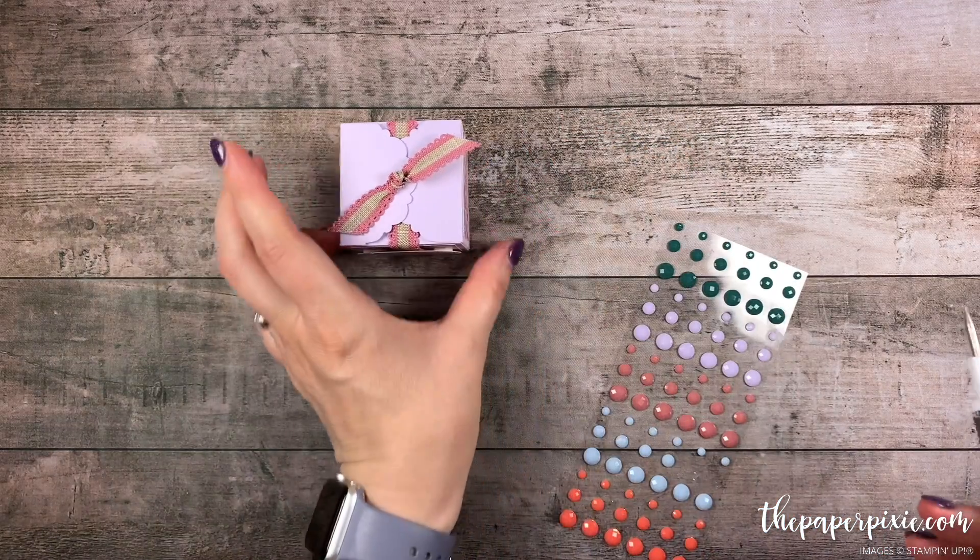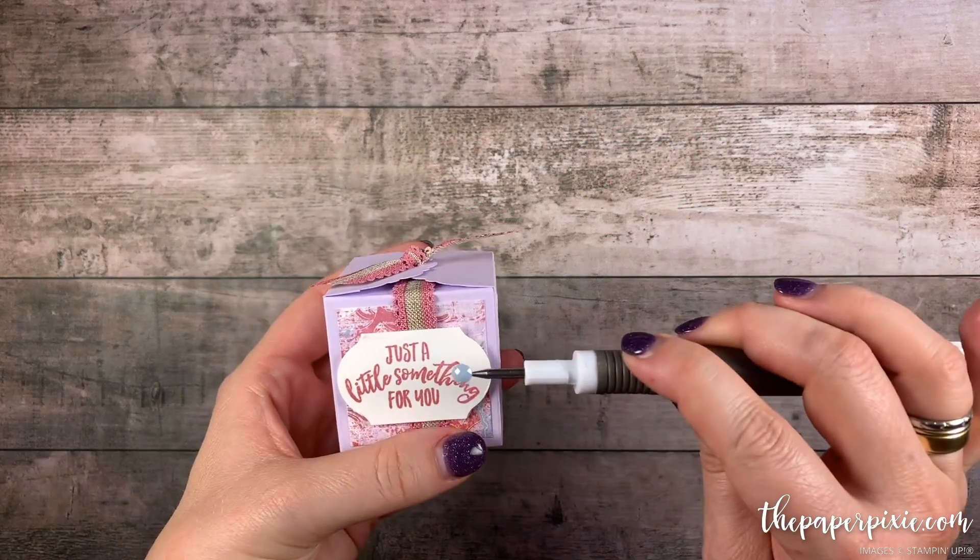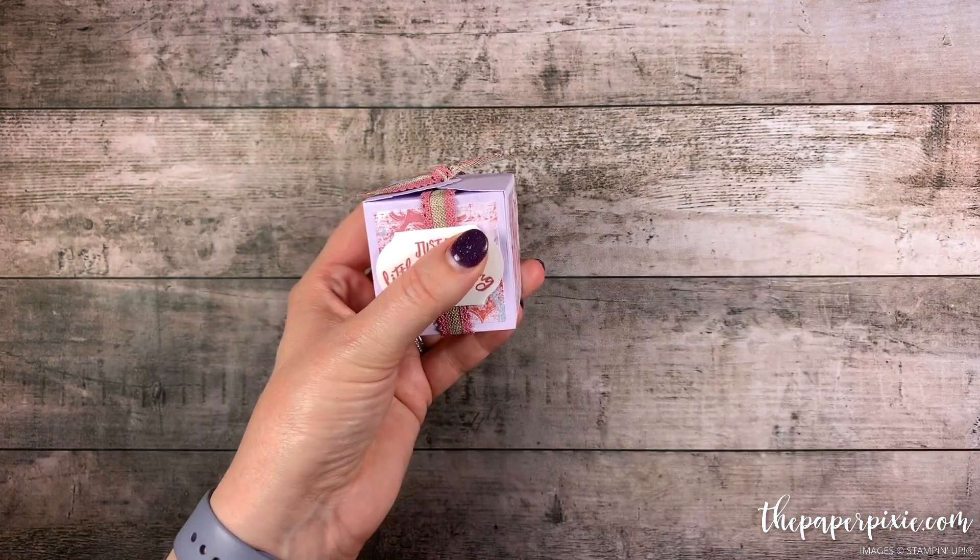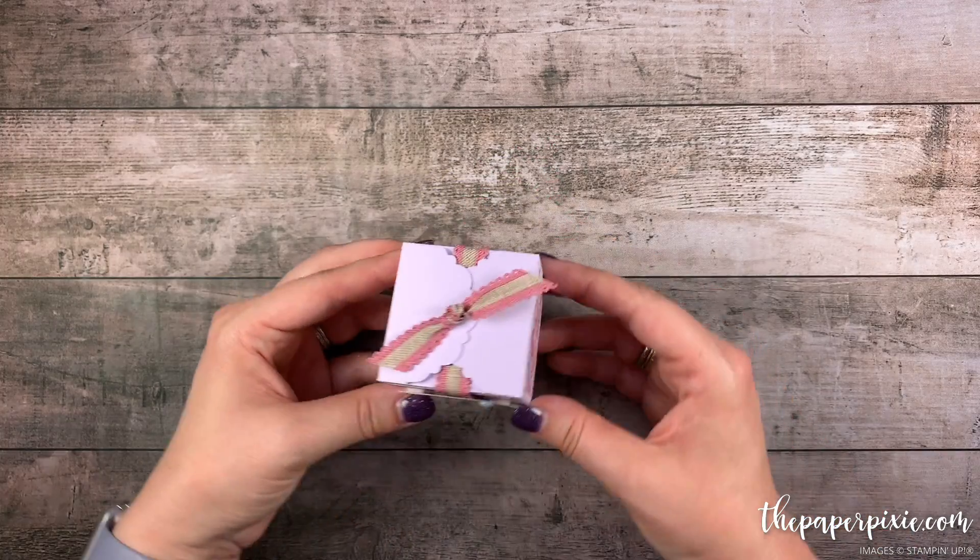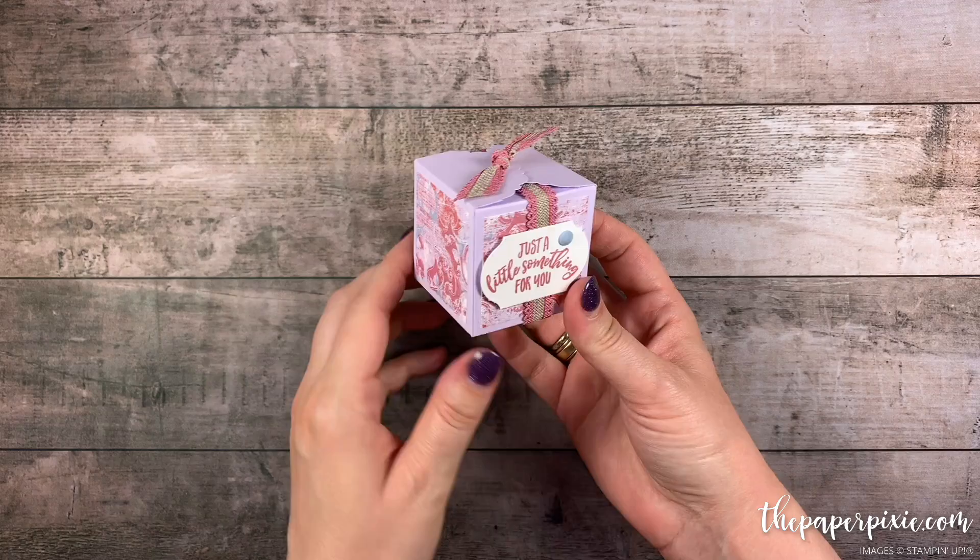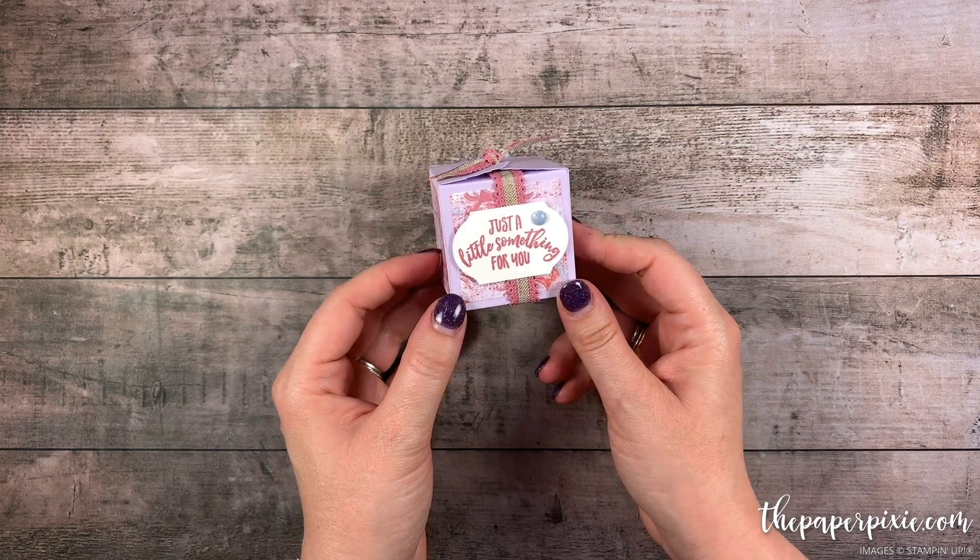And then I'm going to grab a Seaside Spray Faceted Dot and just place that off to the side of our sentiment for just a little bit of bling. And there is the delightful tag topper gift box. I love how this turned out. It's a really good sized box to fit so many different things and I hope you'll give this project a try.